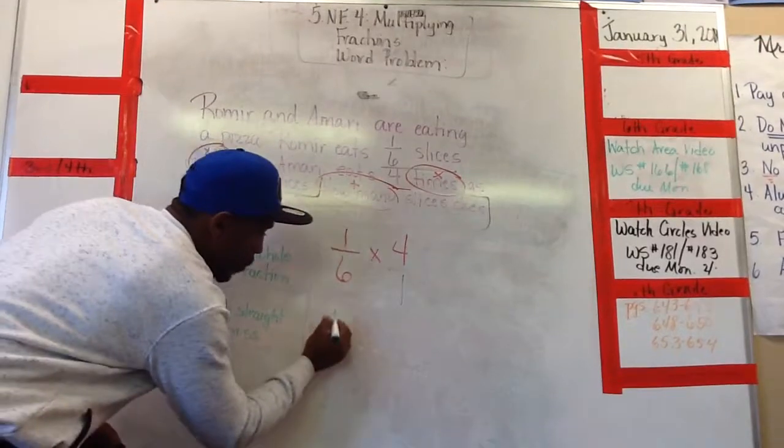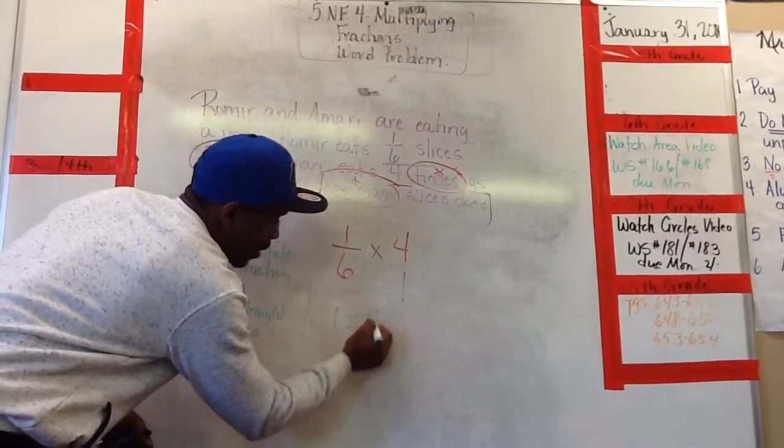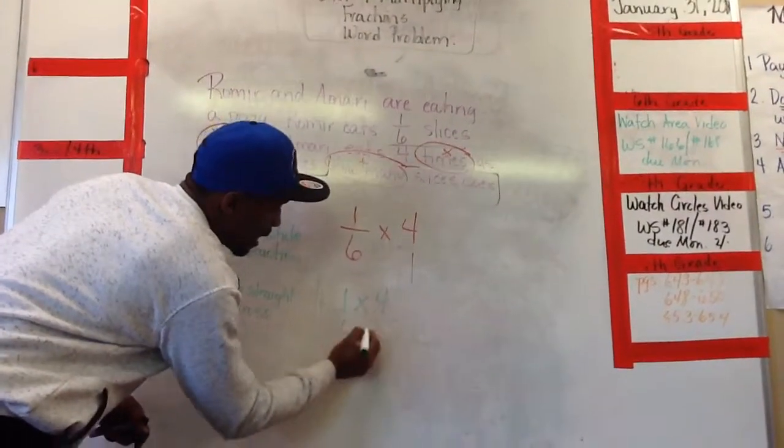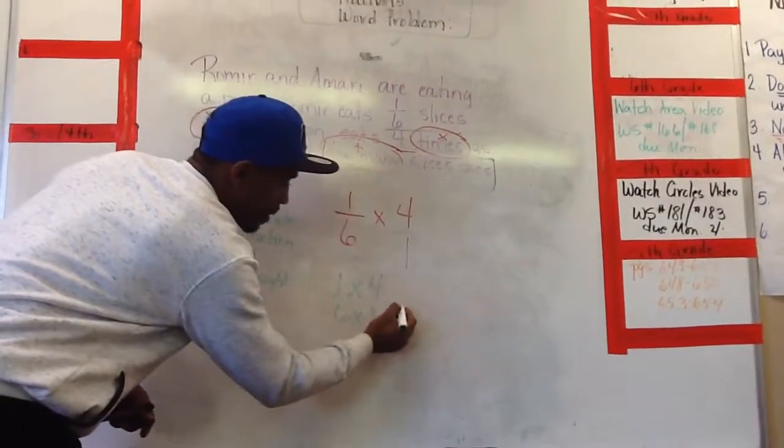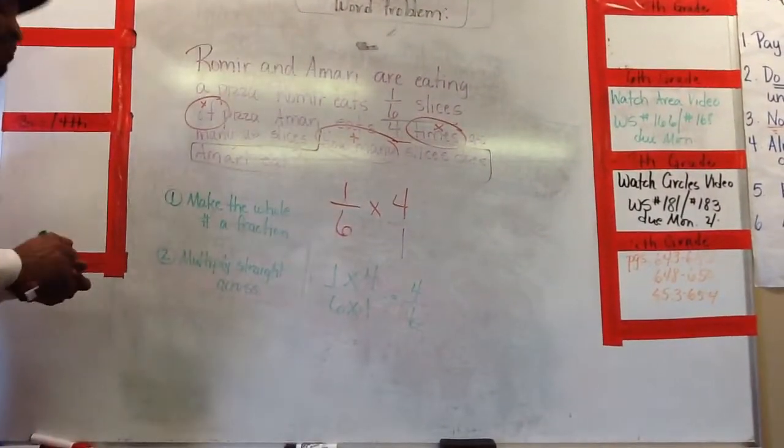So that means you got one times what? Four. Over. Six times one. One. You get what? Four over six.